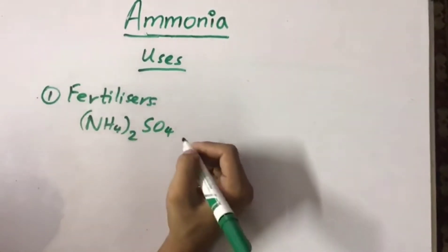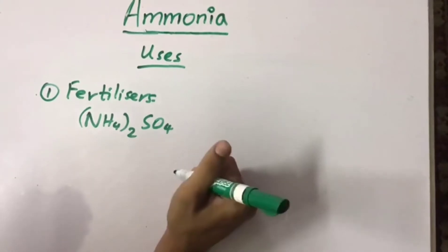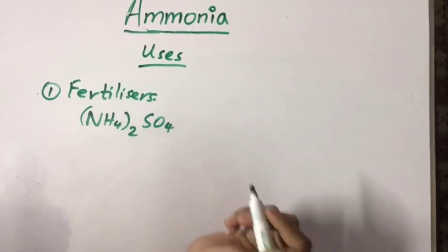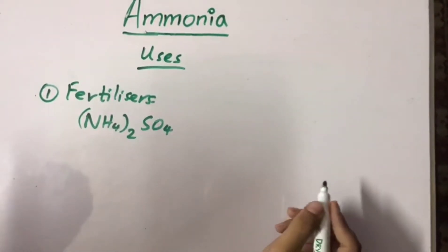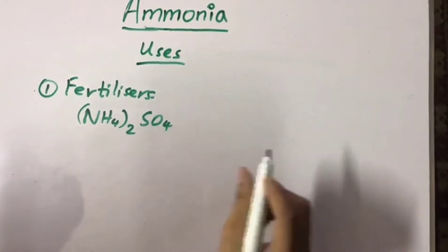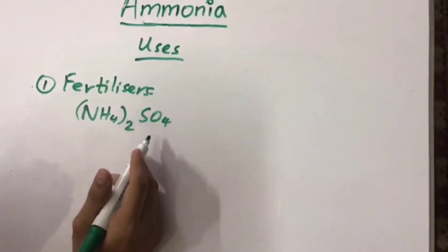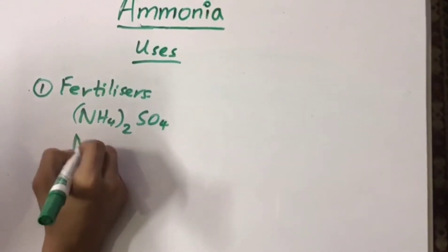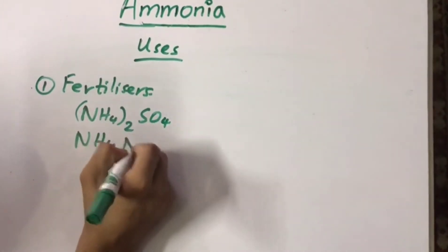Ammonia is reacted with sulfuric acid. And because ammonia is alkaline and sulfuric acid is an acid, they react together to form ammonium sulphate. Similarly, ammonium nitrate is also a fertilizer.